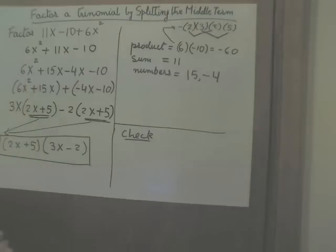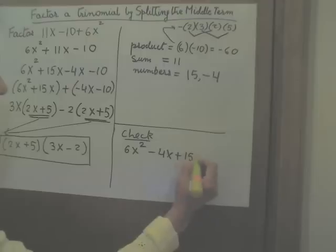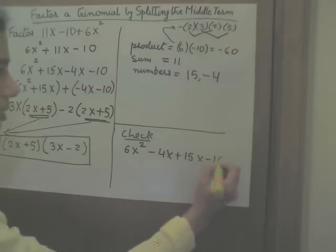Let's go ahead and foil it. Product of first two terms, 6x squared. Product of outer terms, negative 4x. Product of inner terms, plus 15x. Product of last terms, minus 10.